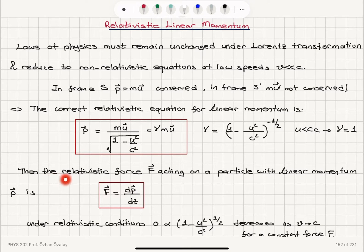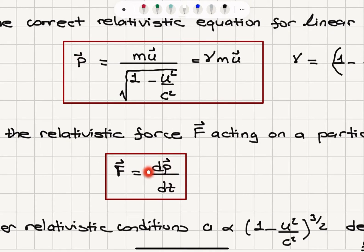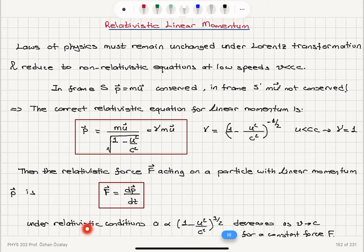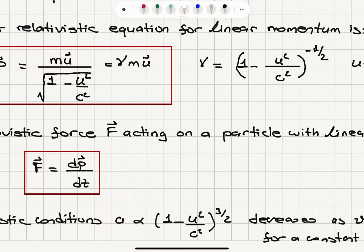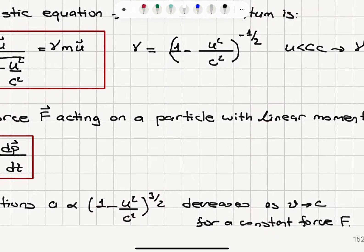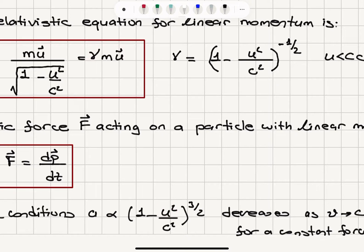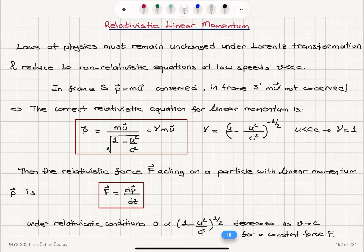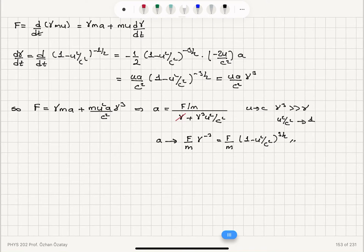The relativistic force acting on a particle with linear momentum P is the rate of change of linear momentum, dP/dt. Under relativistic conditions, if a constant force is applied on an object, its acceleration will vary as 1 minus u squared over c squared to the power 3/2. The acceleration decreases as velocity approaches c. When u equals c, we have zero acceleration — we cannot exceed the speed of light.